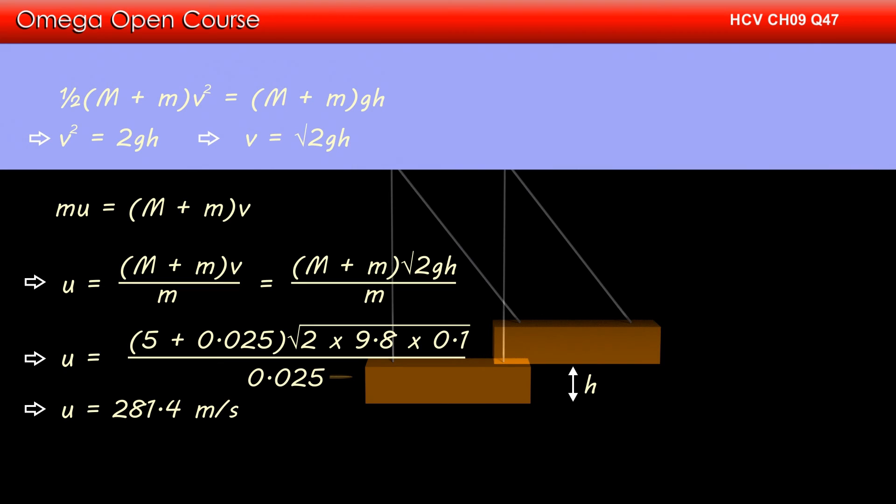Simplifying, we get u = 281.4 meters per second, which when rounded to two significant figures becomes 280 meters per second. This is our answer.